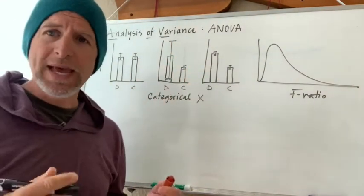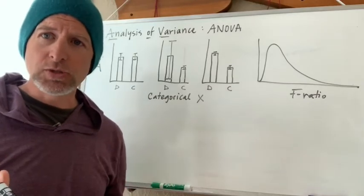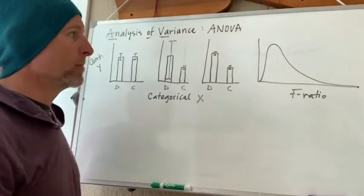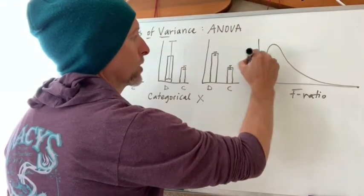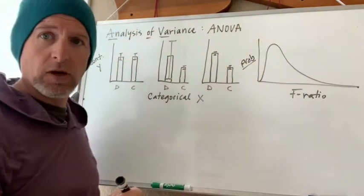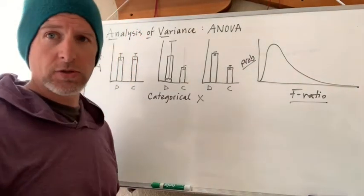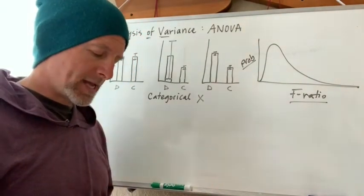Now what are these pesky distributions? What is this all about? In a distribution, probability is represented on the y-axis and the score or the ratio is represented on the x-axis.